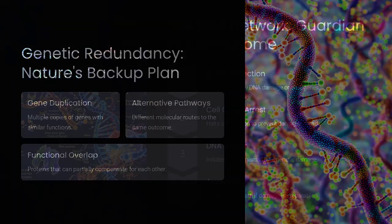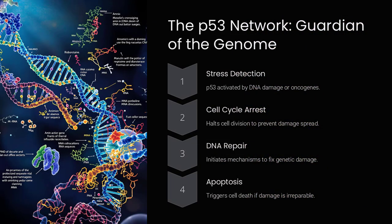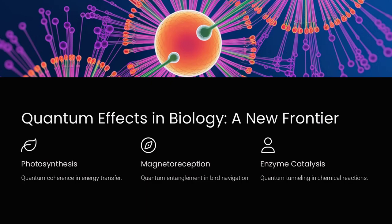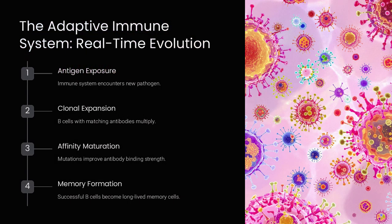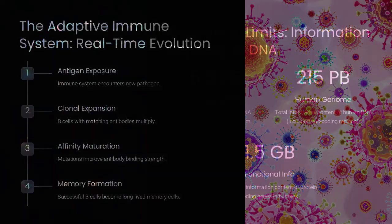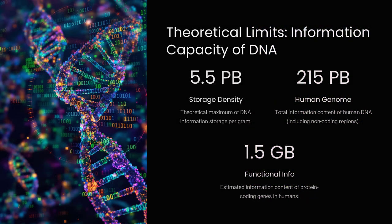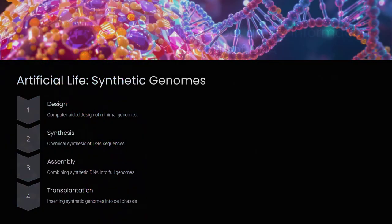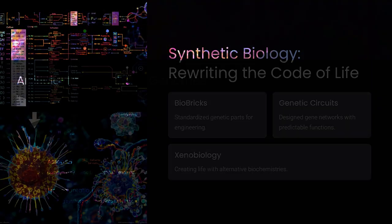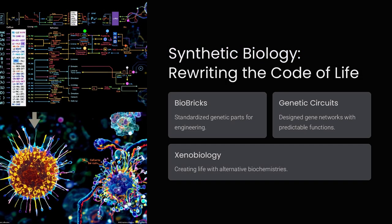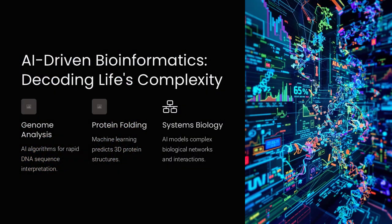A great analogy is computer programming. Just like a compact piece of code can generate complex behaviors through loops, conditions, and interactions, biological systems use regulatory feedback and dynamic networks to amplify genetic information. Does this mean that life's complexity is not solely in the DNA itself, but in how information is processed and utilized?